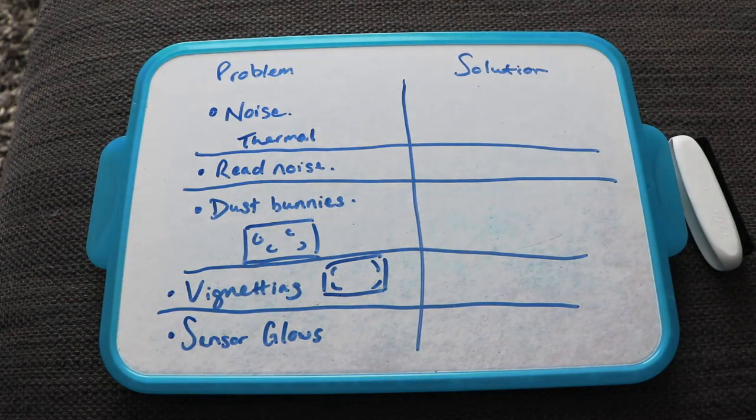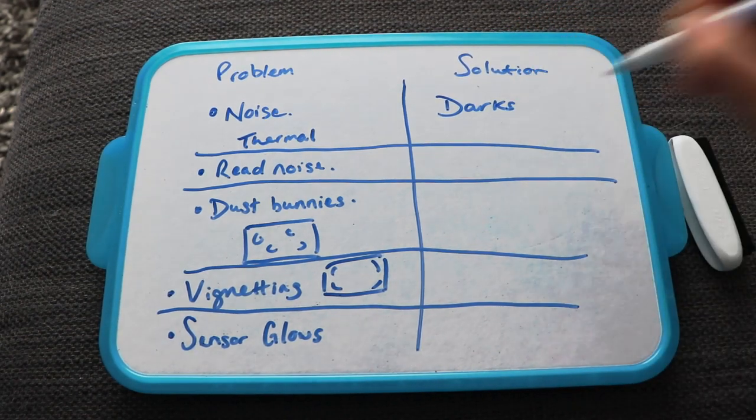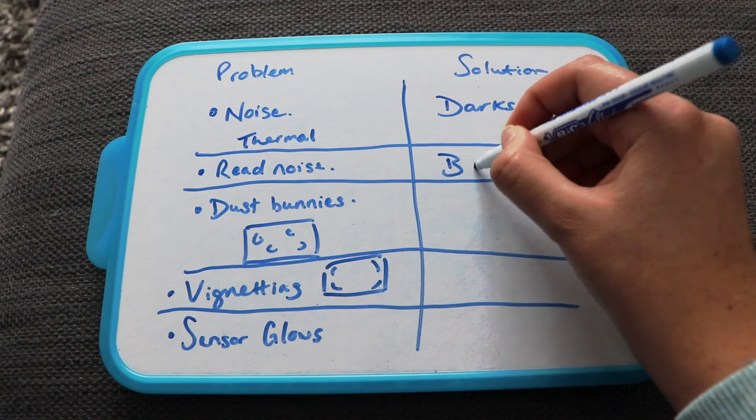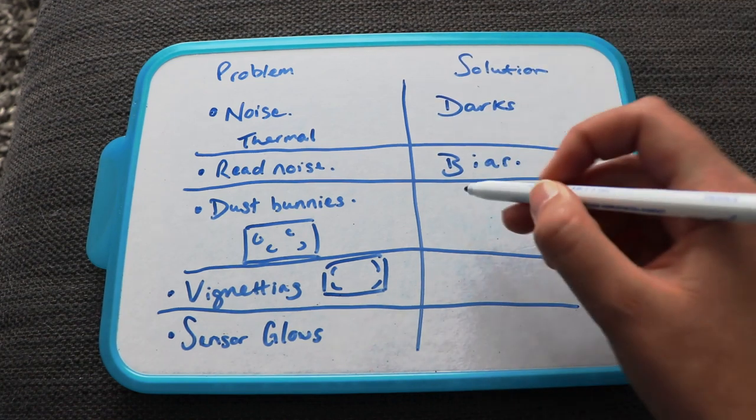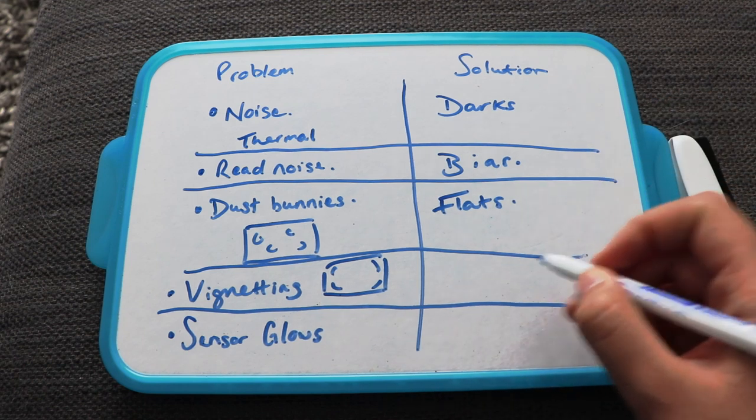So what can we use to sort the thermal noise? Darks. What about the read noise? Bias. Dust bunnies? Flats.